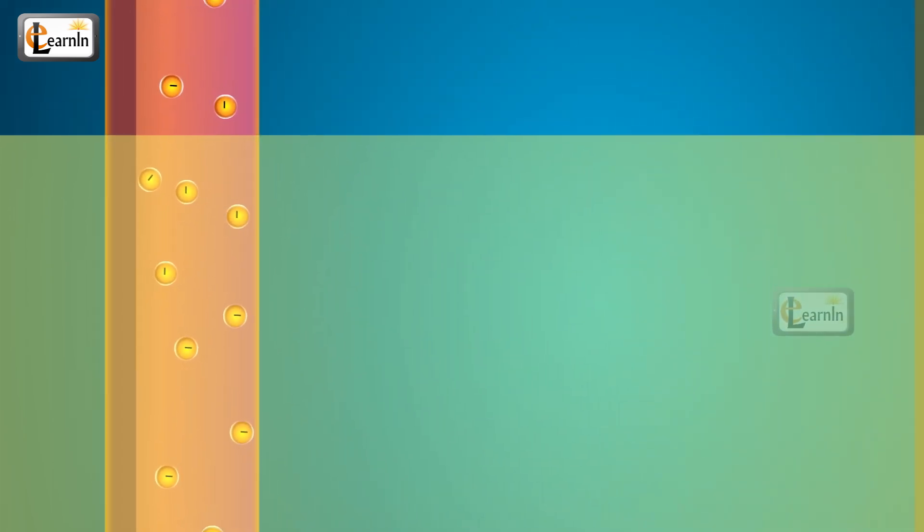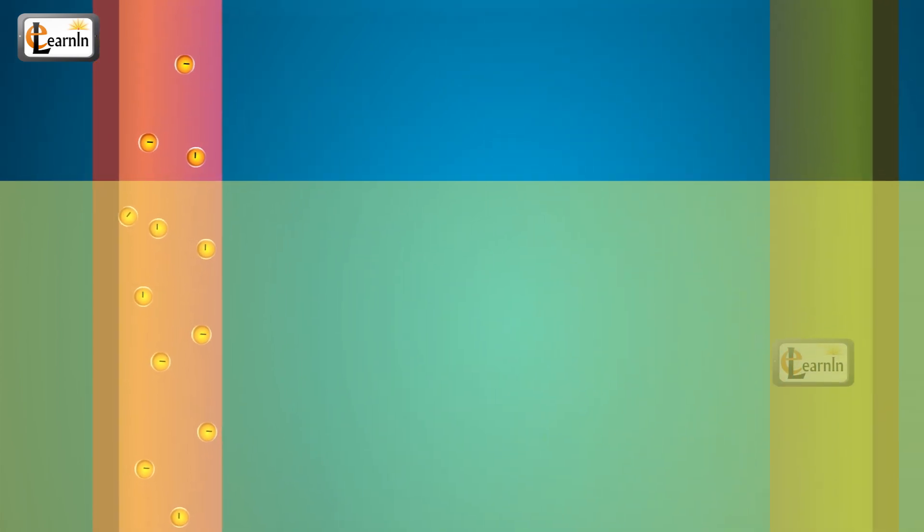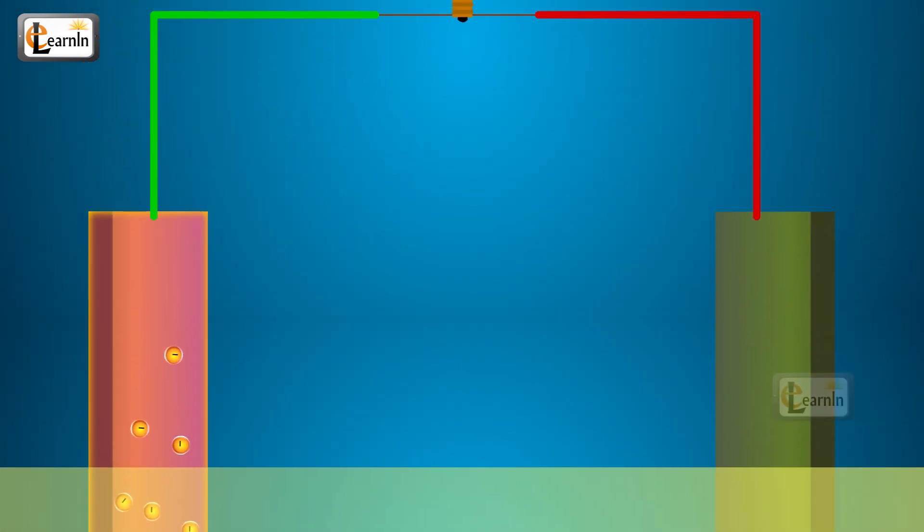But to flow, the electrons need a conductive path. We give them that path when we connect the two strips of different metals with a wire.